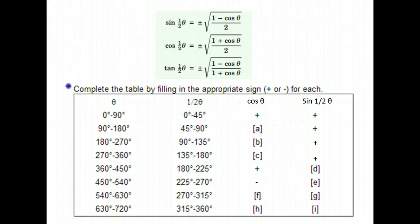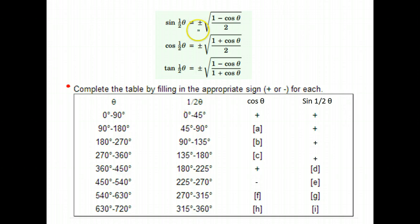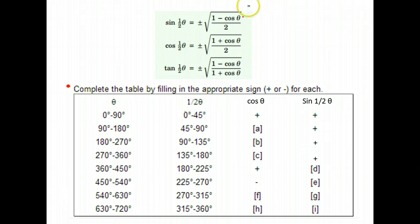For one of your questions, you may be asked to complete a table. The table of values will give you an angle theta and the range — whether theta is between 0 and 90, 90 and 180, and so on. Then it gives you one half of theta, cutting that angle in half, which applies to our half-angle formula. What we're doing here is practicing what the sign would be — positive or negative — depending on which quadrant you are in.